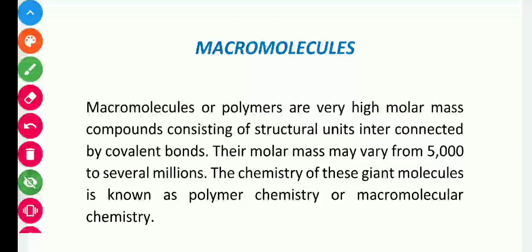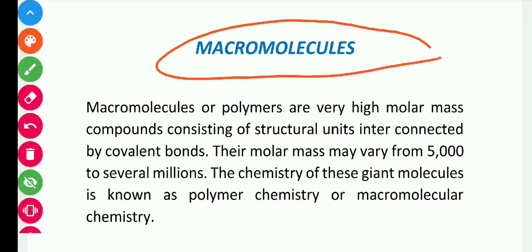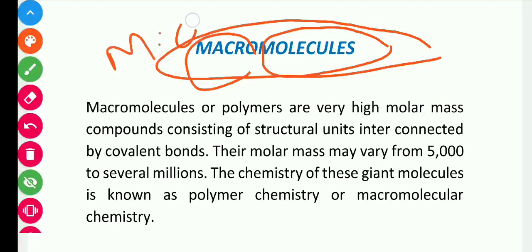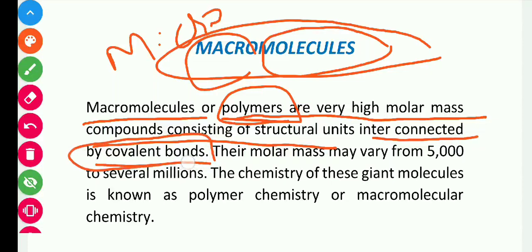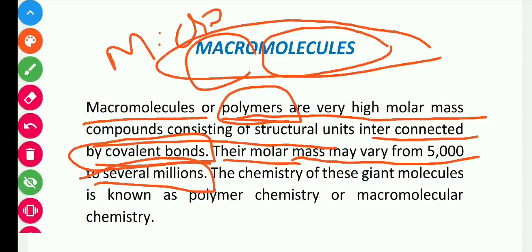The very first question that comes to our mind is: what are macromolecules? The name itself contains two words — macro and molecules. Macromolecules means the size will be bigger. Micro means smaller, and macro means bigger. The polymers are very high molar mass compounds consisting of structural units interconnected by covalent bonds — where there is equal sharing of electrons. Their molar mass may vary from 5,000 to several millions, meaning they have a very high molar mass.